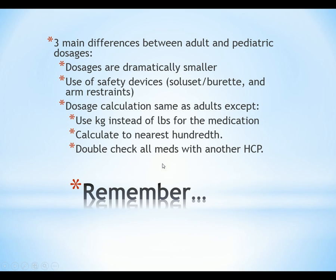There are three main differences between adult and pediatric dosages. First, dosages are dramatically smaller — you should never be drawing up two or three syringes full of medication for a pediatric patient. Second, use safety devices: solusets, buretrols, and arm restraints are all common. Third, dosage calculation is the same as for adults except we use kilograms. We calculate to the nearest hundredth, and always double-check all medications with another healthcare provider — yes, even Tylenol.